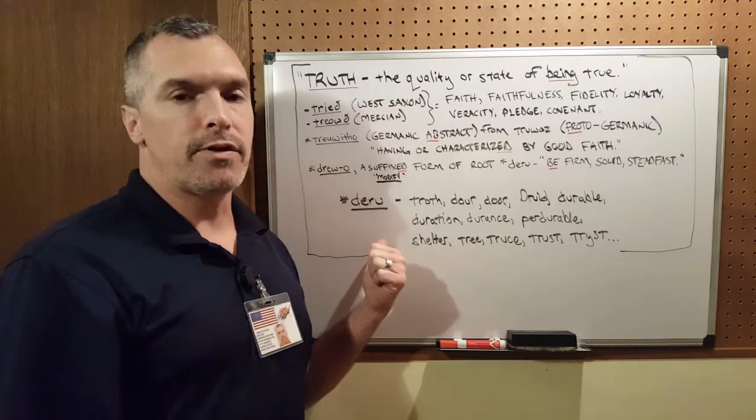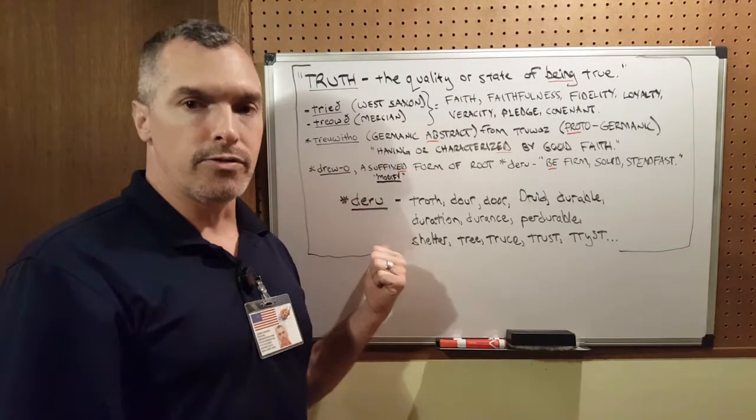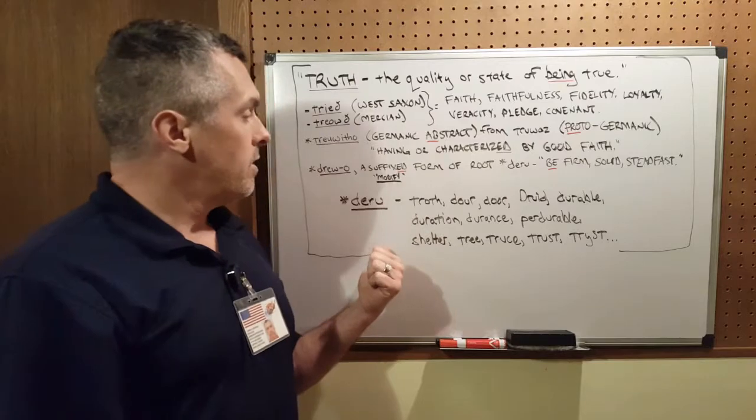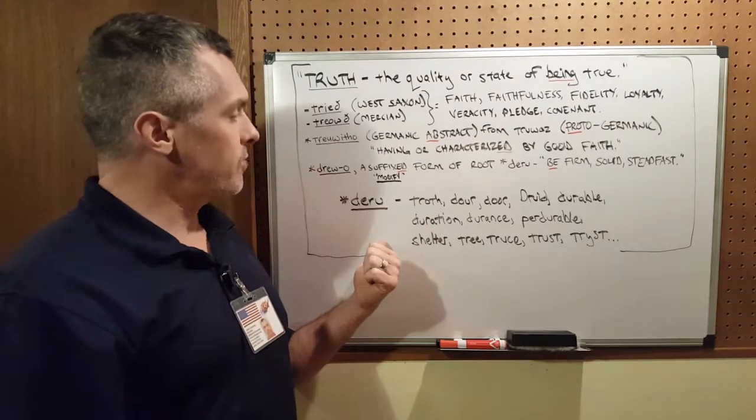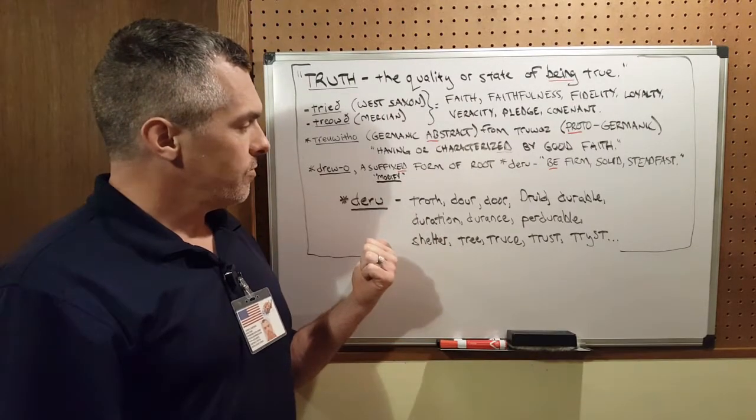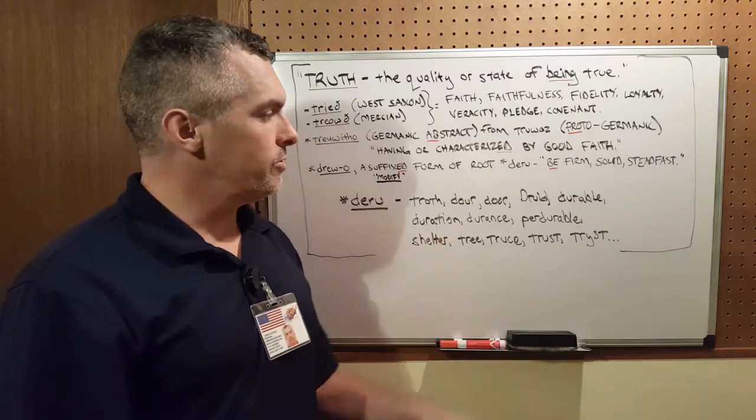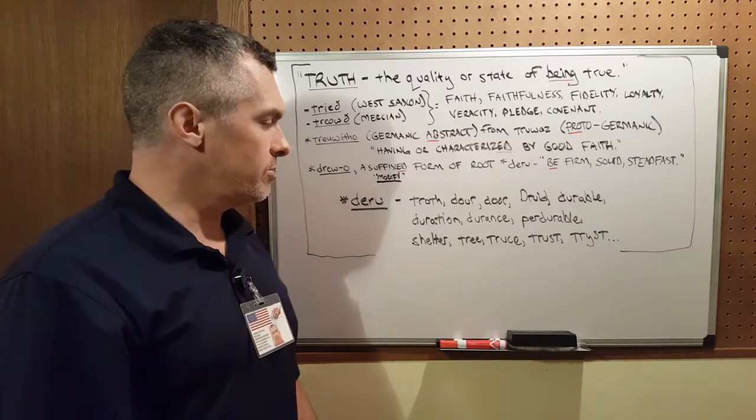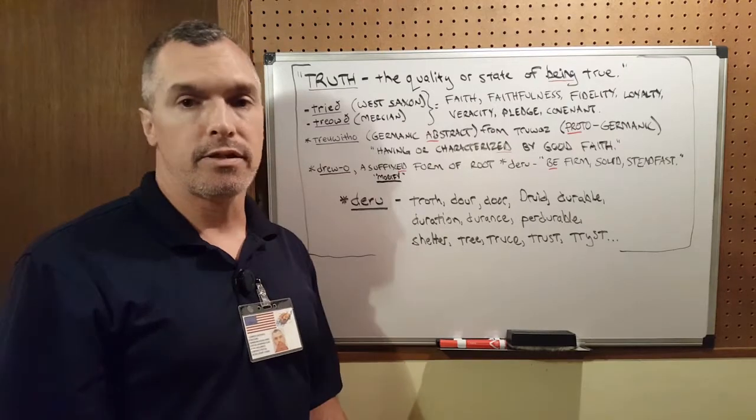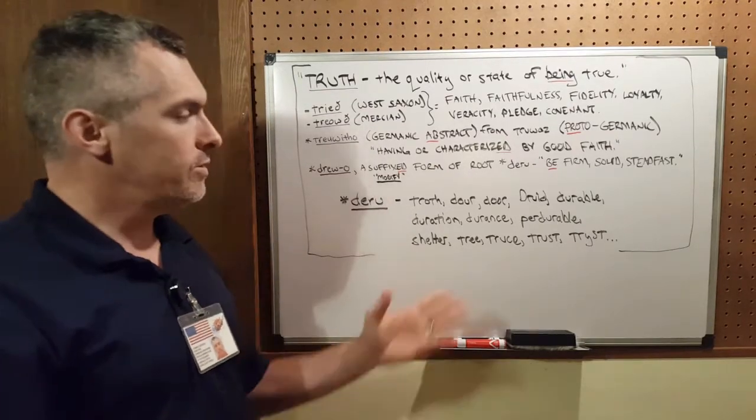This is a very strong and very powerful root that I've found many positive performance contracts come from. We have troth, we have door, druid, durable, duration, durance, perdurable, shelter, tree, truce, trust—all these words come from deru, which is truth, which means firm, steadfast.